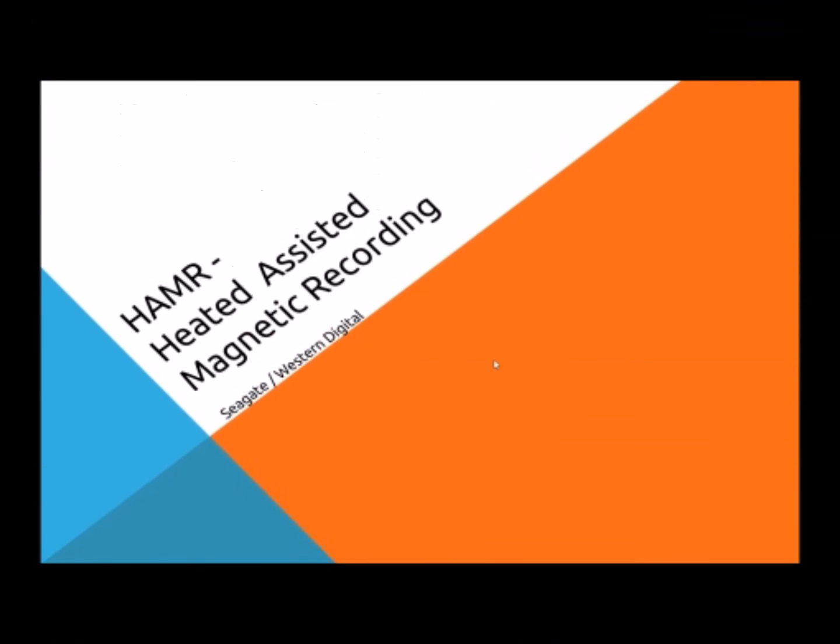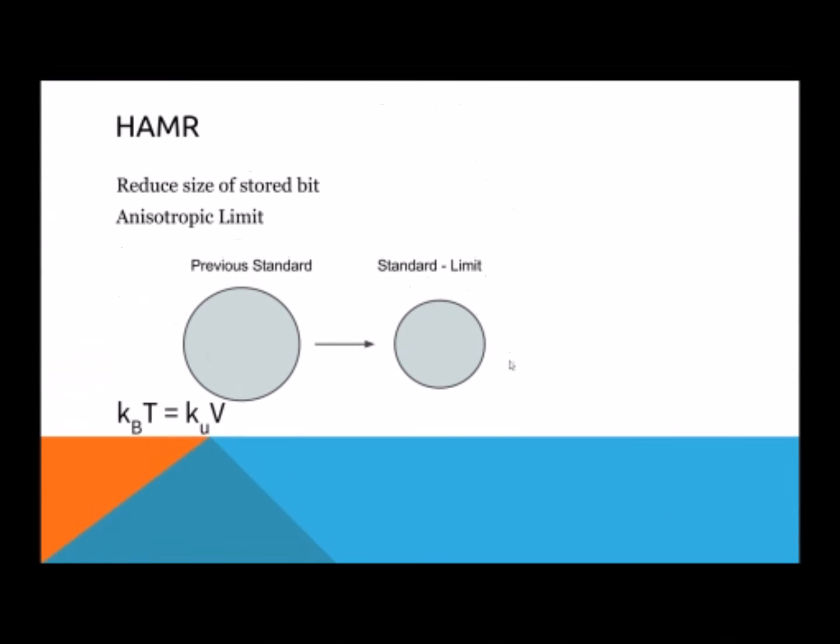One of the more promising technologies that will be implemented soon to increase aerial density is the HAMR technology for heat assisted magnetic recording. It is mainly worked on by Seagate and Western Digital right now. Before we start talking about how heat and HAMR can increase aerial density, let's talk previously about how aerial density has attempted to be increased by bit size.